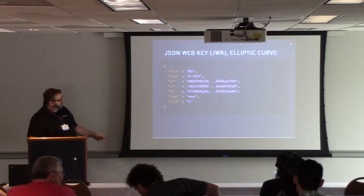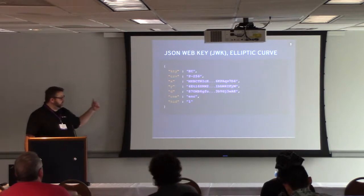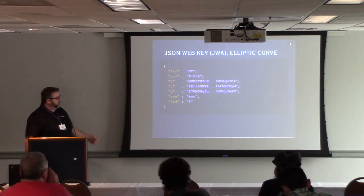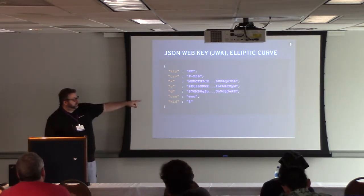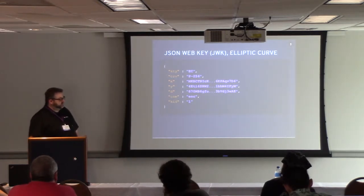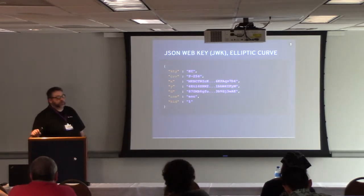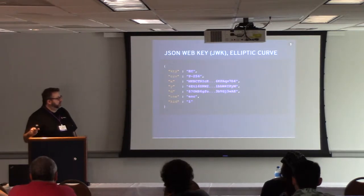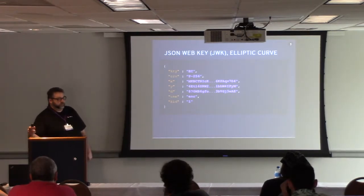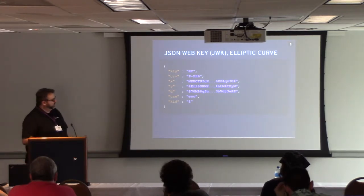We also have two more optional parameters: key use, indicating this key is allowed to be used for encryption, and a KID parameter, which is a unique identifier for the key. It can actually be anything you want — it's pretty common to see the KID be a thumbprint of the key, or any string that uniquely identifies it. I'll explain more about what thumbprints are shortly.